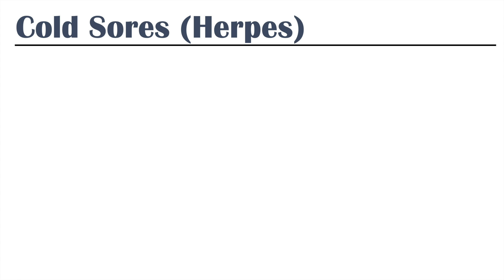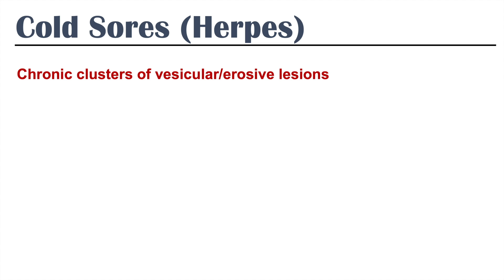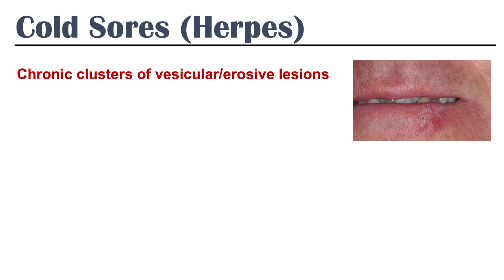Cold sores or herpes are chronic clusters of vesicular erosive lesions. They are basically groups of little skin lesions that become little vesicles that can erupt and become erosions.